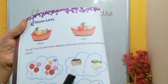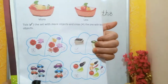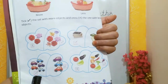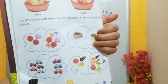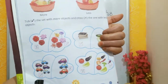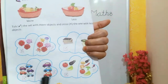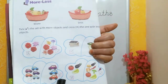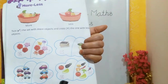Okay children, now these are cars — more cars, so we will tick in this box, and these are less cars, so we will cross in this box.